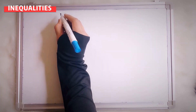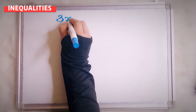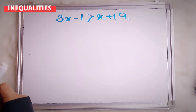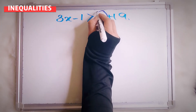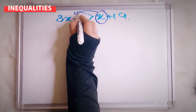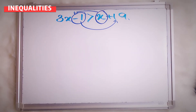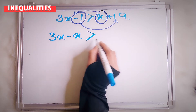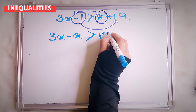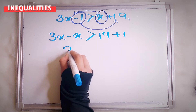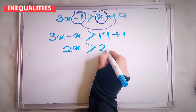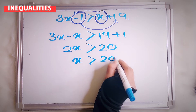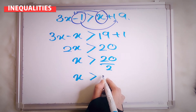One more. How about 3x minus 1 more than x plus 19? Now you bring x to here and negative 1 to the other side. So your 3x minus x — the sign is still the same. So 19 plus 1 — here will be 2x more than 20. So x more than 20 divided by 2. That means your x more than 10.